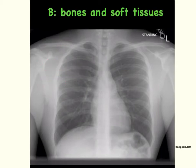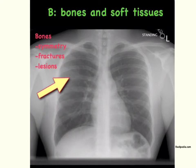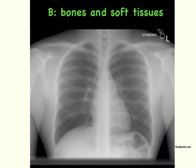B stands for bones and soft tissues. When evaluating the bones, you look for symmetry, fractures, osteoporosis, or metastatic lesions. In pediatrics in particular, we pay close attention to the clavicles and to the ribs to evaluate for fractures. When evaluating the soft tissues, it's important to evaluate for edema or subcutaneous air.